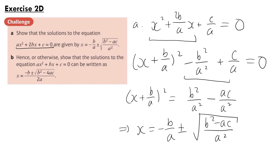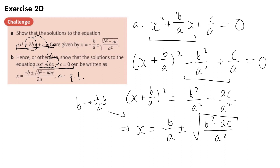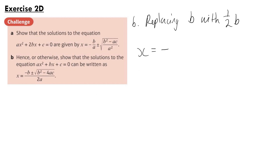Part B says: hence or otherwise, show that solutions to ax² + bx + c = 0 can be written as the quadratic formula. Going from the equation in part A to this new general form, we see the only thing that's changed is the coefficient of x has gone from 2b to b — we've halved the coefficient. So everywhere we see b, we can replace it with (1/2)b. We get x equals minus (1/2)b over a, plus or minus the square root of (1/4)b² minus ac, all over a².